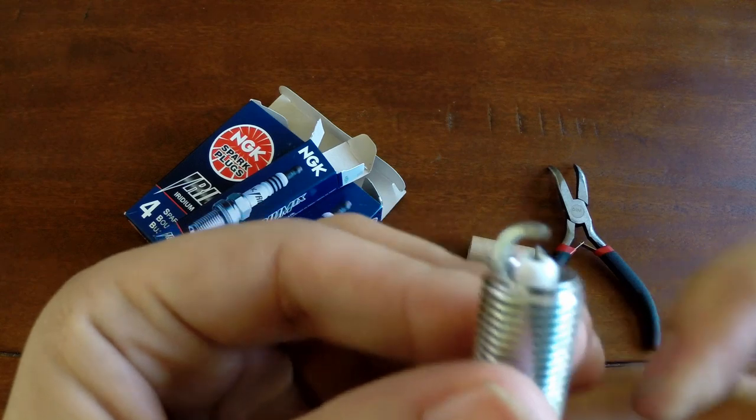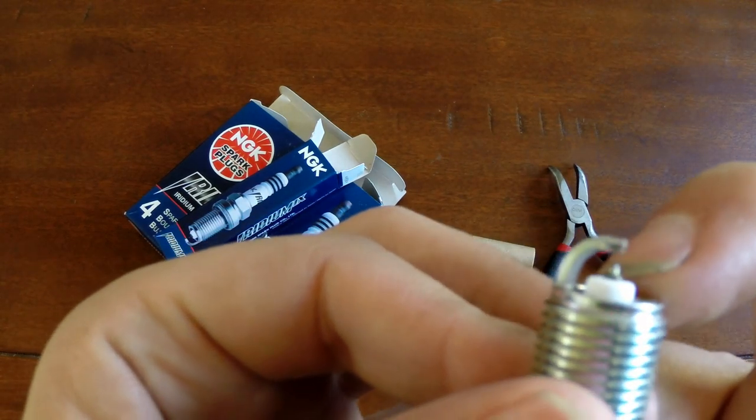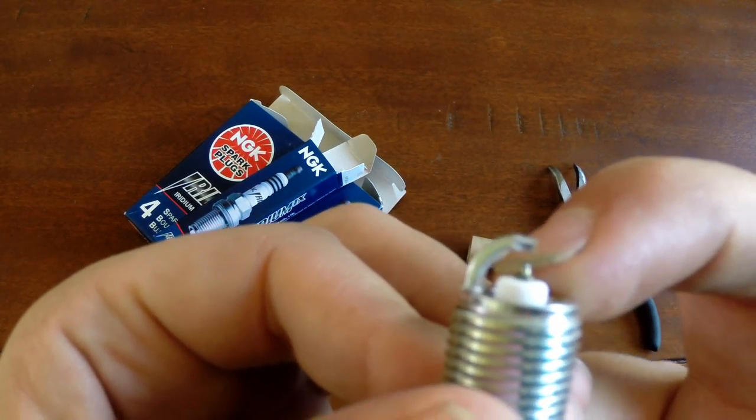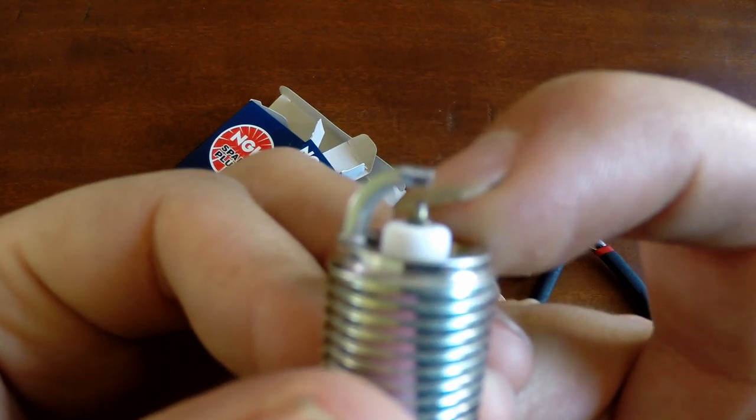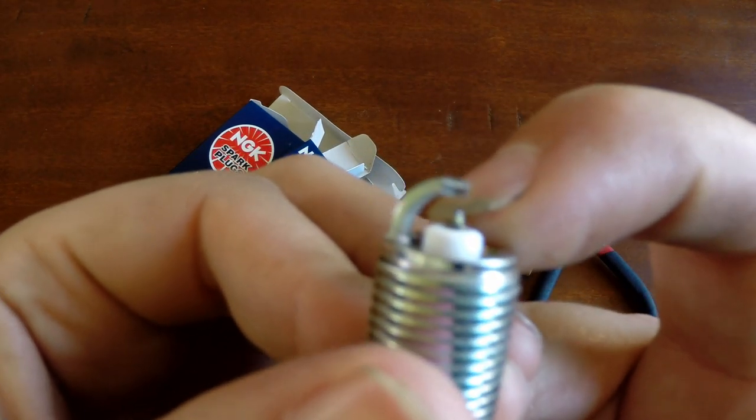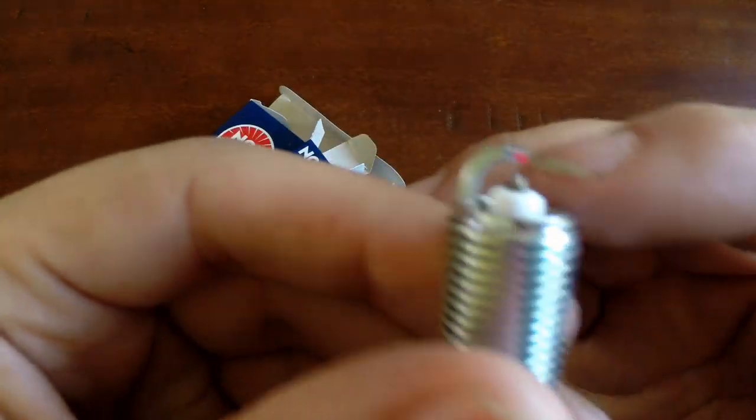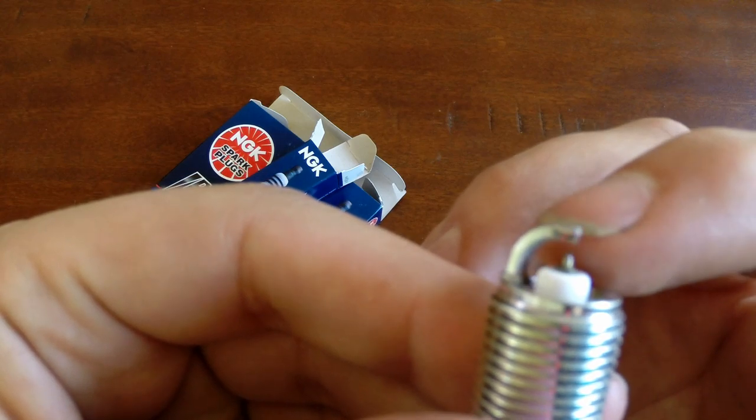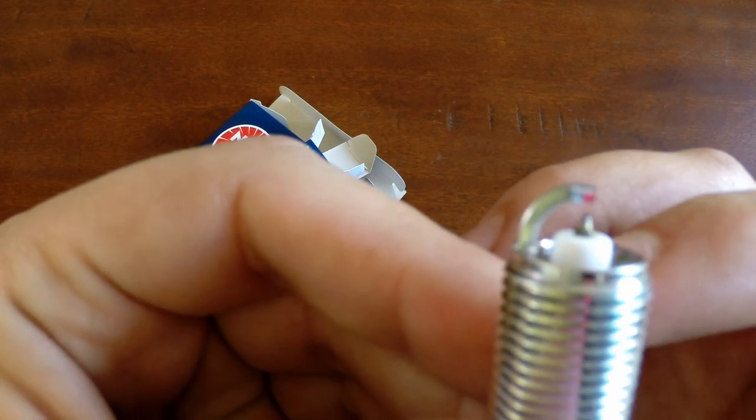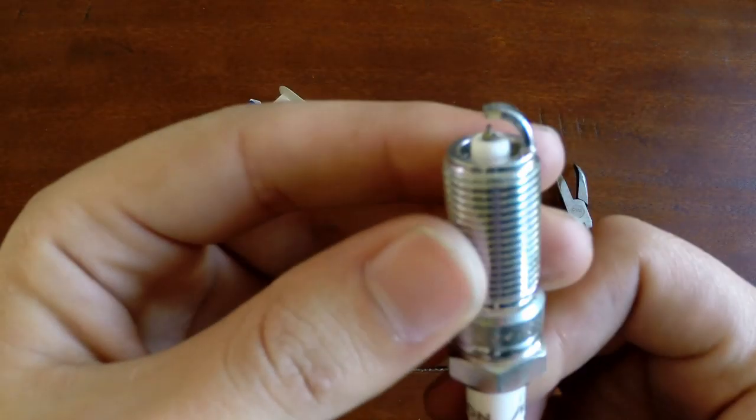Next what I do is I inspect the tip of the iridium tip here. So if you can see that, that is still intact. If this tip is broken at all, you're going to want to get that replaced because the plug is ruined. That tip is pretty important. That's what sparks from here to here. So if that tip is broken, get it replaced. But that's good on our plug.